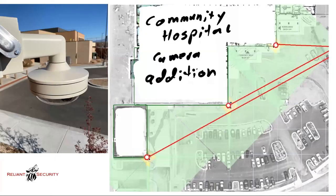Ericont cameras are really good but pretty expensive. Ericont kind of gave the multi-sensor camera its name — they're the ones that came out and patented it, and now I buy them from Ericont. Very few manufacturers have done it correctly. Since they came out with it, I figured they're probably the best at the multi-sensor view. I've also seen AXIS make some multi-sensor cameras and they're very proud of their product as well.